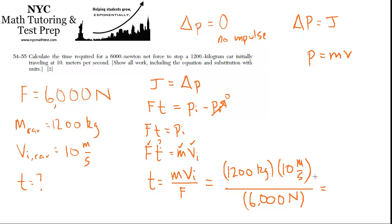So 1,200 times 10 is 12,000, and then 12,000 divided by 6,000 is 2. And what's the units? Well, kilogram meters per second is the units of momentum. And newtons is really kilogram meters per second squared.